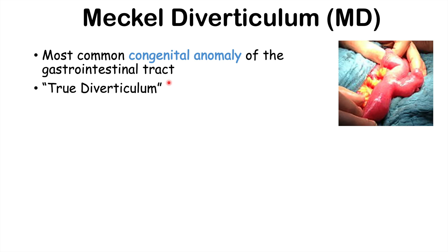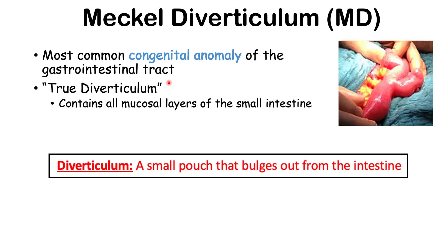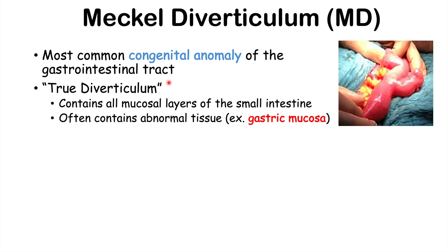It is considered a true diverticulum, meaning that it has all three layers of the small intestine: the mucosa, submucosa, and muscularis propria. It often contains abnormal tissue as well — specifically gastric mucosa where it shouldn't be — and this can lead to a variety of signs and symptoms we'll discuss later in this lesson.